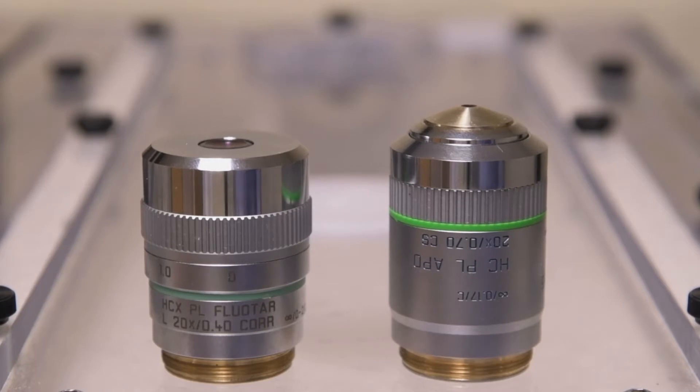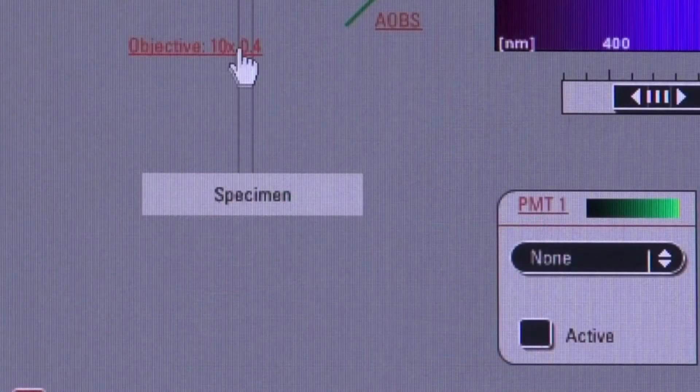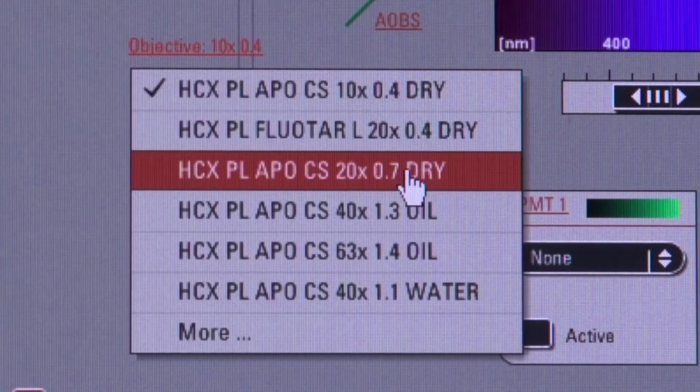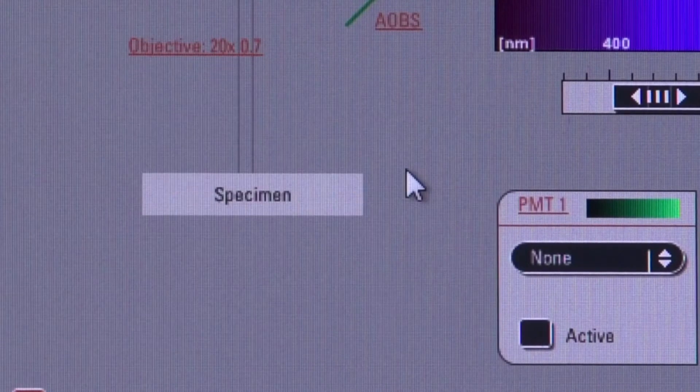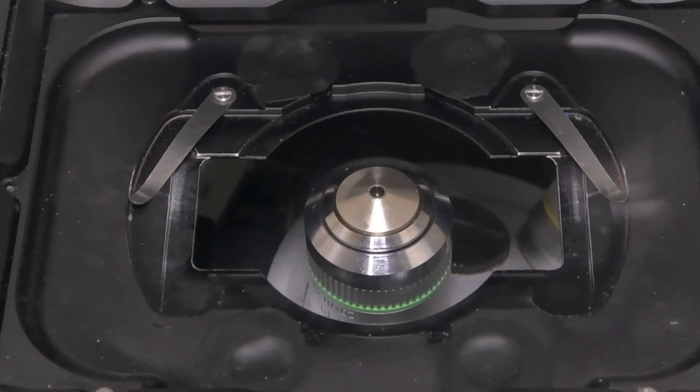This 20X has an NA of 0.4 and the other is 0.7, so we want to use the 0.7 if we can. If you have a slide or a coverslip bottom dish, the higher NA objective will work nicely. Let's click on the 20X 0.7 objective and the lens will automatically flip into place over in the microscope. The 20X 0.7 NA looks like this. It's a bit larger than the 10X and extends further up. You can also see the green band along the bottom.